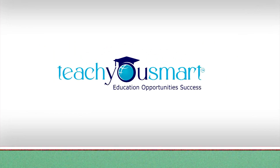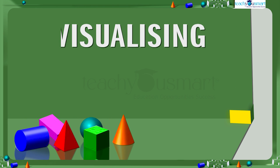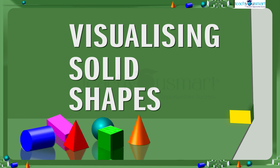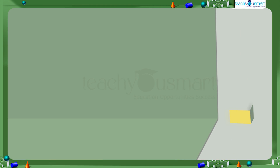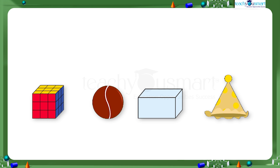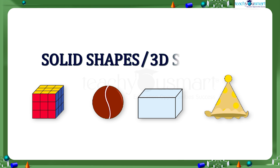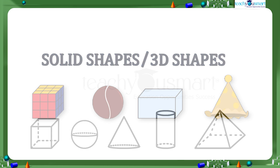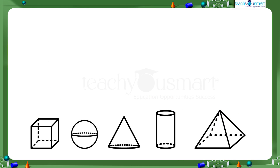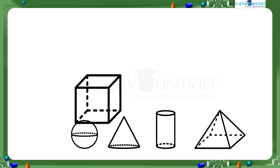Hello students, welcome to Teach You Smart. Today we are going to open up a new topic: visualizing solid shapes. These objects have length, width, and height, and they need space to occupy. These shapes are called solid shapes or 3D shapes. Some common examples of solid shapes are cube, sphere.